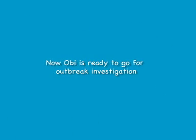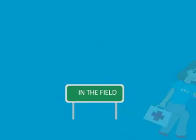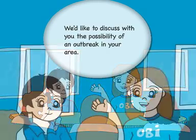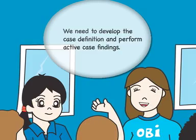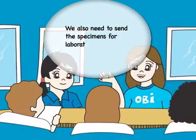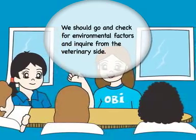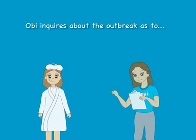Now Obie is ready to go for outbreak investigation. What should Obie do first in the field? We'd like to discuss with you the possibility of an outbreak in your area. We need to develop the case definition and perform active case findings. We also need to send the specimens for laboratory confirmation. We should go and check for environmental factors and inquire from the veterinary side. What data should Obie collect? Obie inquires about the outbreak as to time, place, and person.